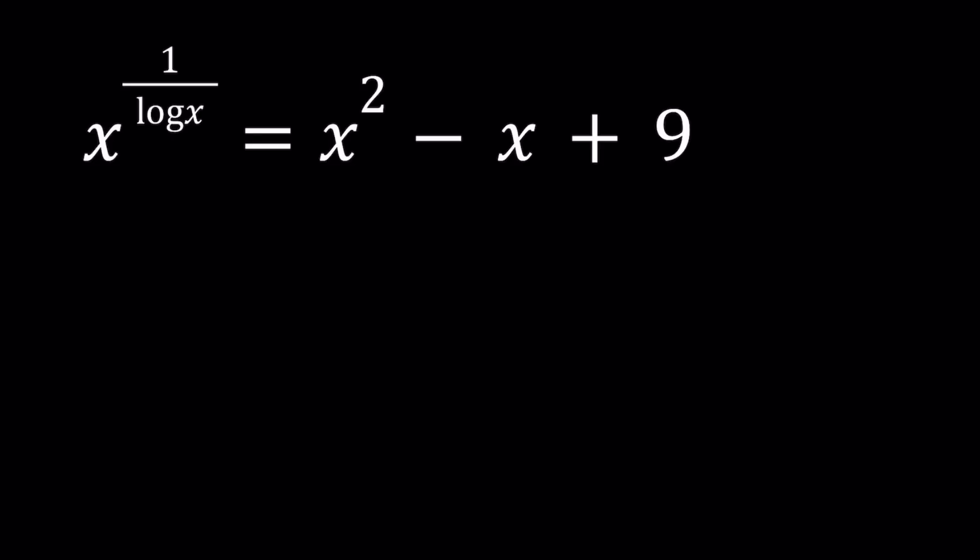So we have x to the power 1 over log x equals x squared minus x plus 9. This is fairly interesting because, first of all, I believe this is a homemade problem because I haven't seen this anywhere. Second, we have a polynomial on the right hand side which is actually a parabola, and on the left hand side we have something interesting. So let's take a look at this.